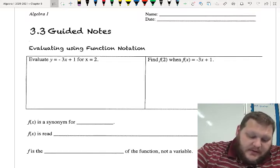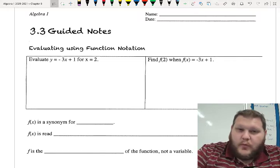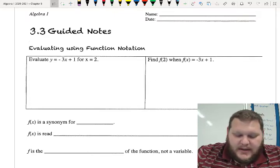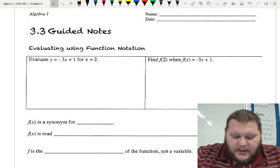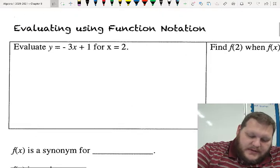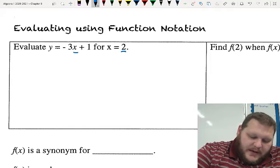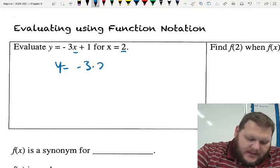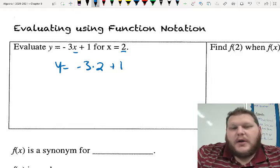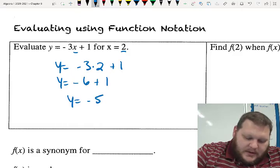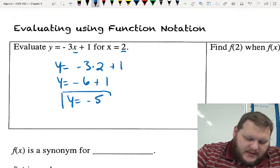So we're just going to start with evaluating some stuff with a format we're used to. For this first one here, we're asked to evaluate y equals negative 3x plus 1 when x equals 2. So if we were going to do that, all we're doing is substituting 2 in for my x value. So y equals negative 3 times 2 plus 1. The order of operations tells me I have to multiply first to give me negative 6 plus 1. I'm going to collect my like terms and I get y equals negative 5.